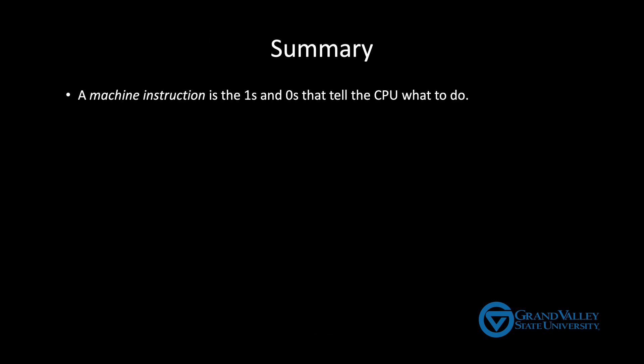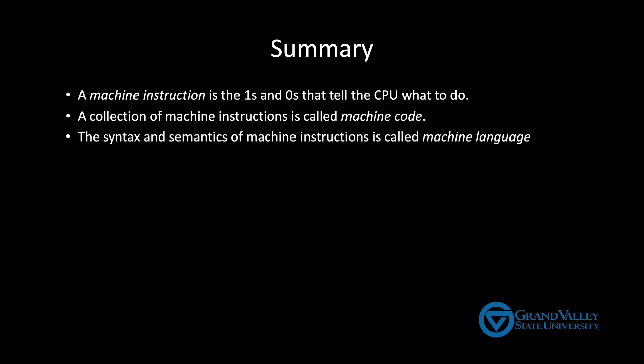A machine instruction is the ones and zeros that tell the CPU what to do. A collection of machine instructions is called machine code. The syntax and semantics of a set of machine instructions is called a machine language. Now, if you're not familiar with those terms, the syntax of a language is the rules for valid statements, like what combinations of ones and zeros are allowed. The semantics of a language is what the statements mean. So in the case of machine language, its semantics is what do the ones and zeros for a particular instruction mean.